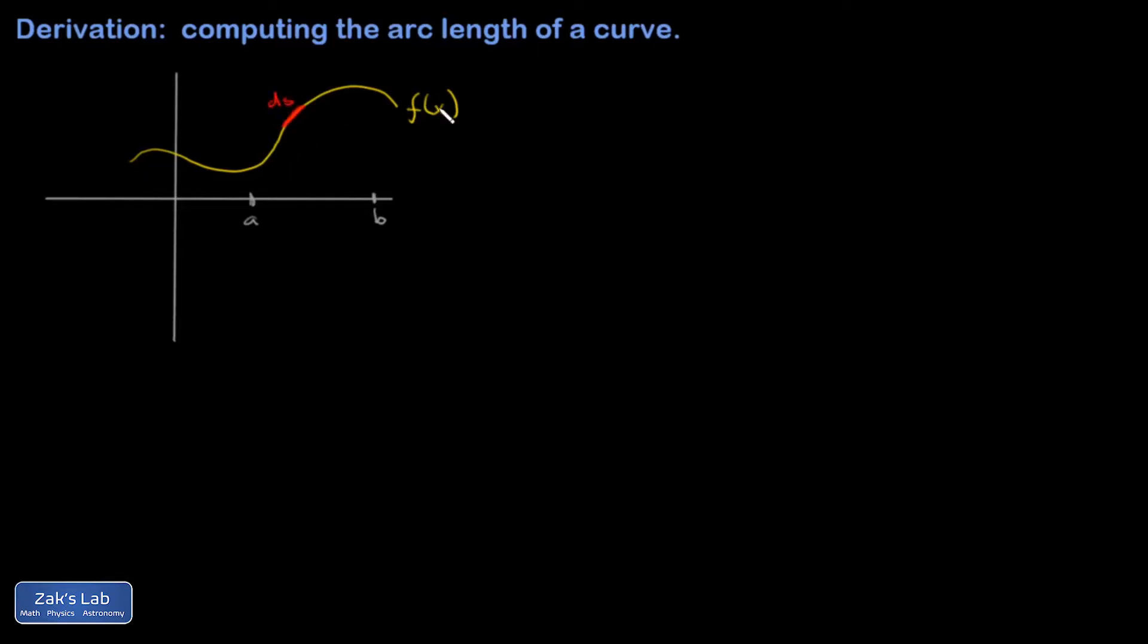I'm going to call that a little contribution to the arc length, ds. I'll switch to gray for this. And ds can be broken down into its x and y components. That's dx and dy, these two infinitesimal quantities. And those two little line segments are perpendicular to each other.